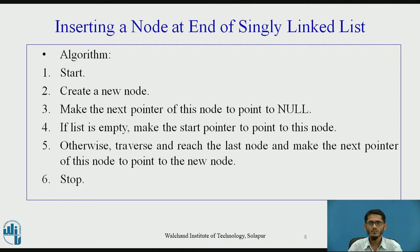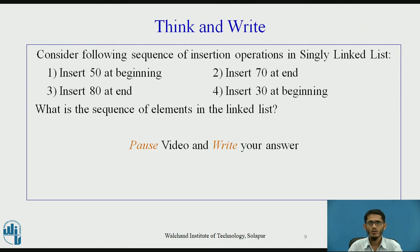Now we have a question for the students. Consider the following sequence of insertion operations on the singly linked list: first, element 50 is added at the beginning; then element 70 is added at the end; then element 80 is added at the end; and finally element 30 is added at the beginning. We have used a mix of insert-at-beginning and insert-at-end operations. What will be the resulting sequence of elements in the linked list? Pause the video and write your answer.